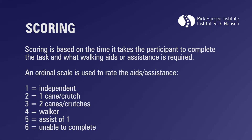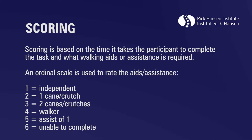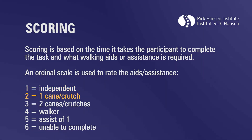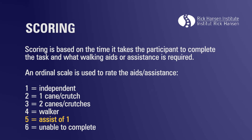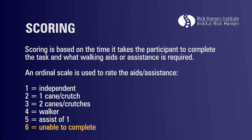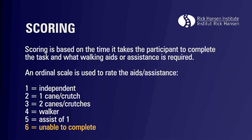Scoring is based on the time it takes the participant to complete the task and what walking aids or assistance is required. An ordinal scale is used to rate the aids or assistance: a rating of one is given to a participant who completes the task independently; two if the participant uses one cane or one crutch; three if two canes or two crutches are used; four if a walker is used; five if the assistance of one person is required (whether minimal, moderate, or maximal); and six if the participant is unable to complete the task.